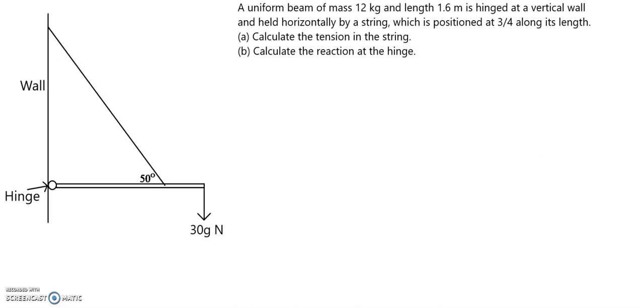There is also a mass of 30 kg which is acting at the very end of the uniform rod, so the weight of the 30 kg mass will be 30g Newtons acting vertically downwards. The string itself is inclined at 50 degrees to the horizontal. The hinge is shown and we have a vertical wall.